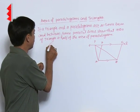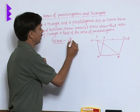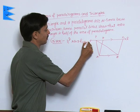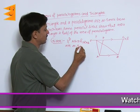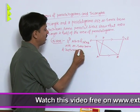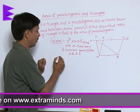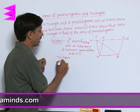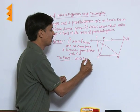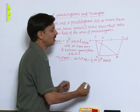As usual, we write the given: parallelogram ABCD and triangle PAB are on the same base and between the same parallel lines AB and L. What we need to prove is that area of triangle PAB is half of the area of parallelogram ABCD.